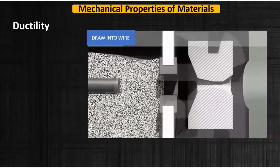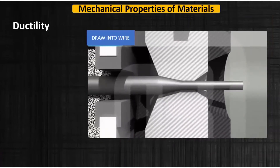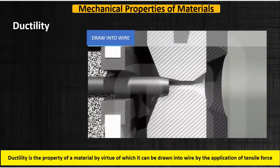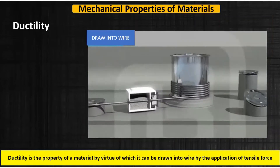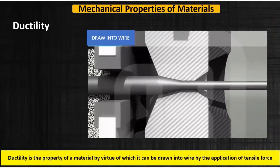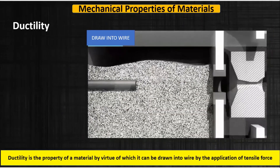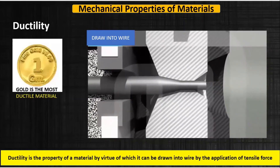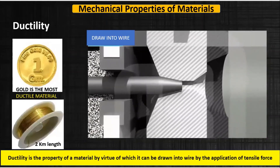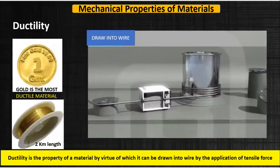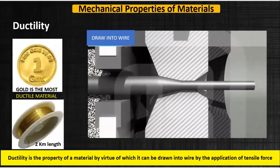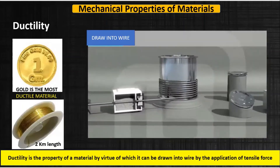Next is ductility. When a rod is passed through a die and pulled under tensile force, it is drawn into wire because of the property of ductility. Gold is the most ductile material — from one gram of gold, we can draw a wire of two kilometers in length. So ductility is a property of material by virtue of which it can be drawn into wire by the application of tensile force.